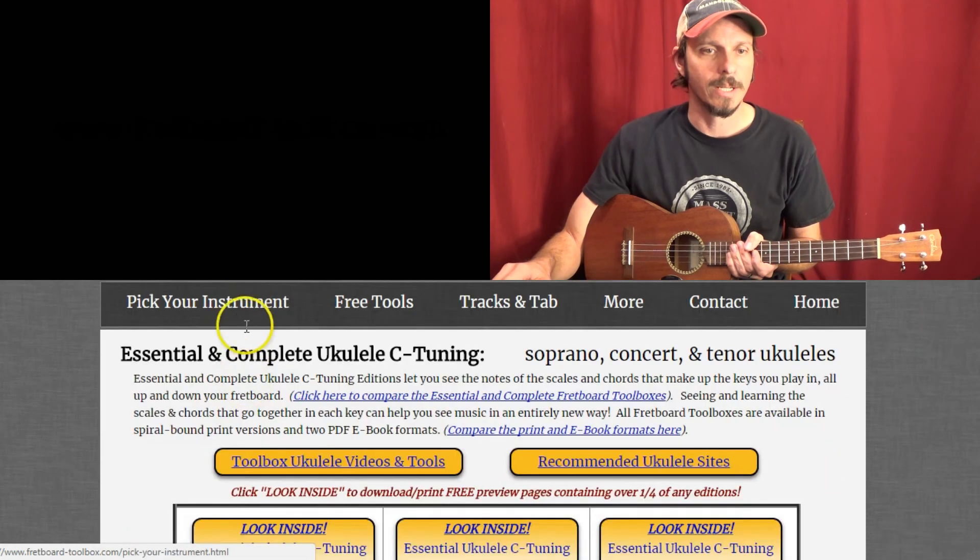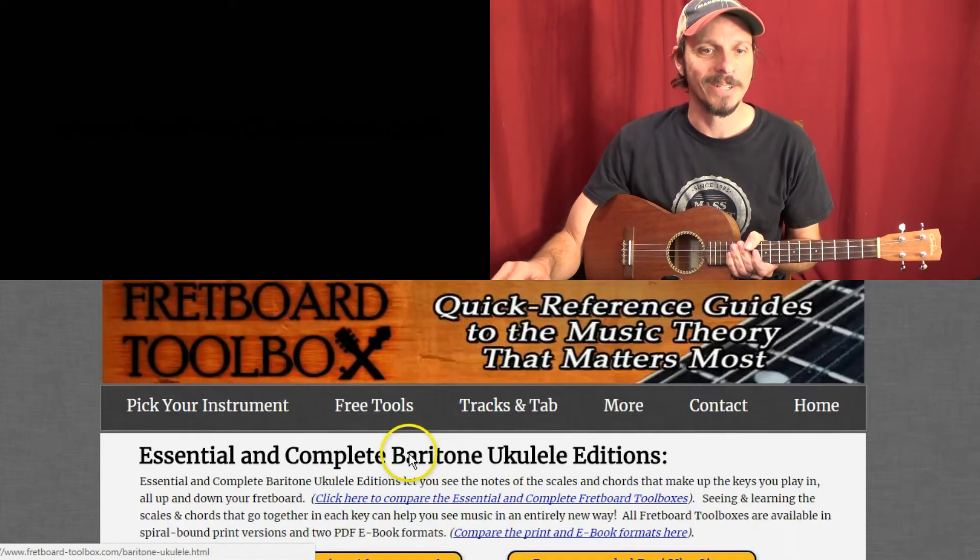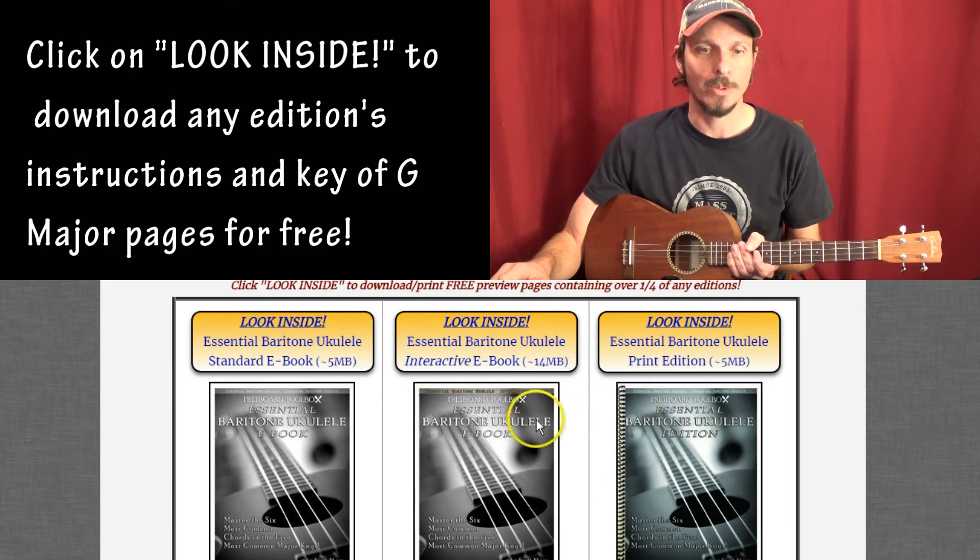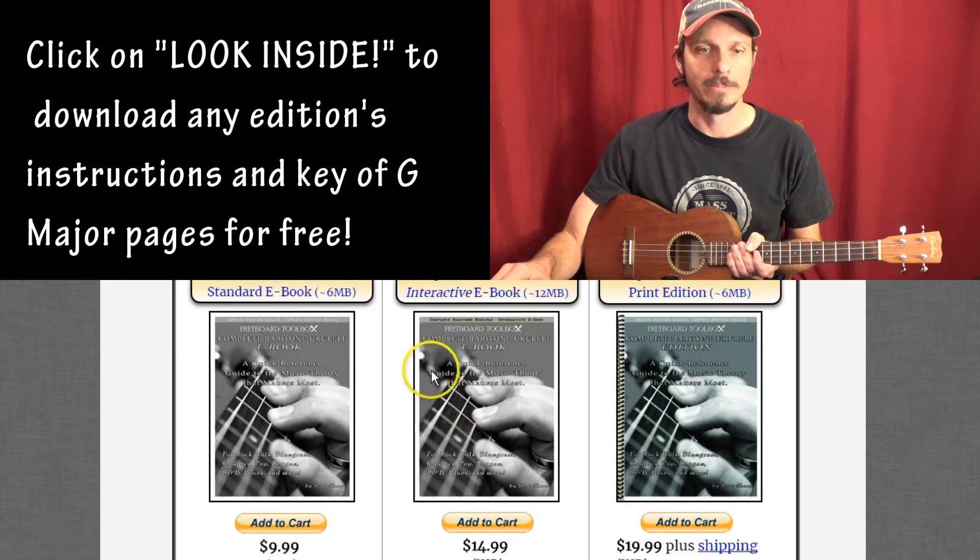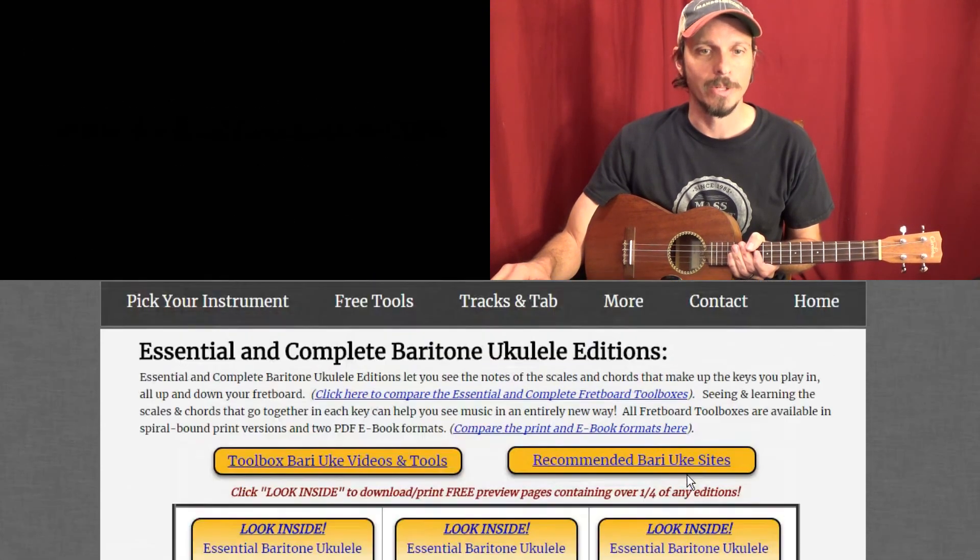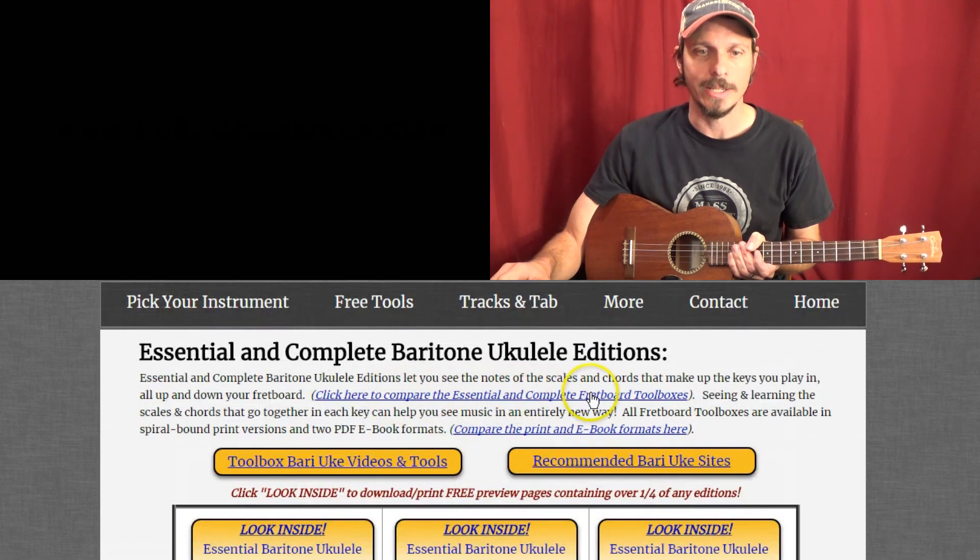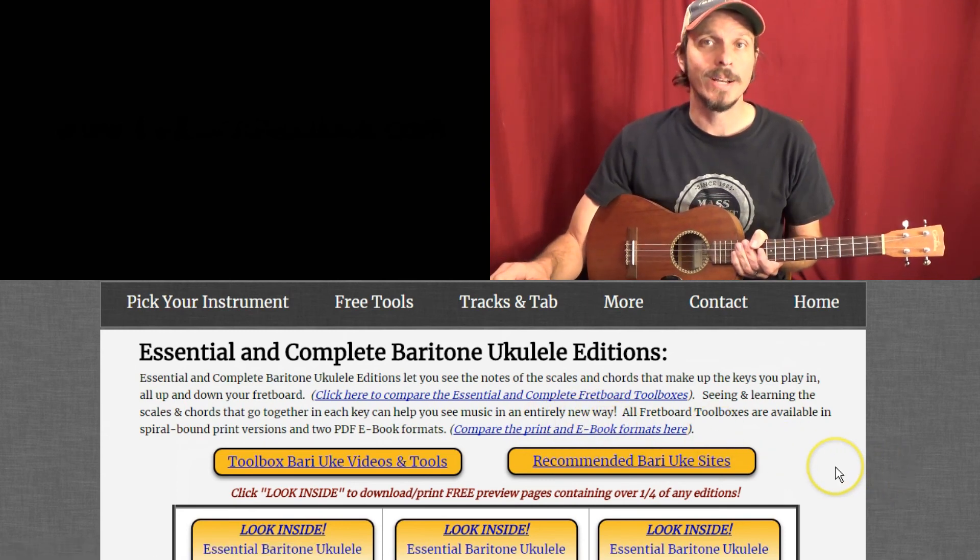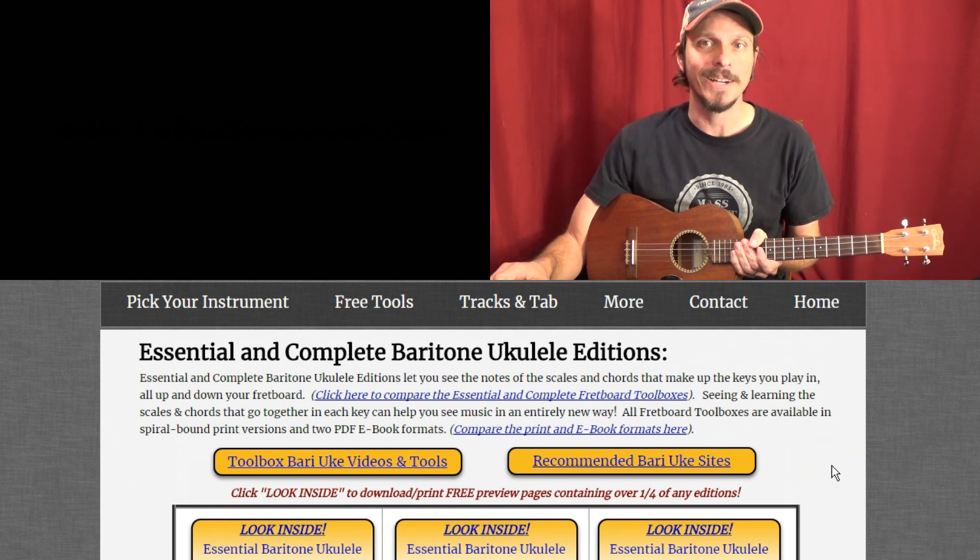And then if you're interested in looking at the toolboxes further, go to pick your instrument and I've got books set up just the same for all these different instruments. Today we were using a baritone uke and we're using the essential edition. I've got them in print books and interactive ebooks and standard ebooks. I've got a complete version that doesn't have the colored circles but it's got all the keys. If you want to read more about those books click here. If you want to read more about the different versions you can get, standard ebook, interactive ebook or print, click here. So anyways I wish you happy playing and I appreciate you stopping by and I'll have lots more videos coming on lots more instruments.